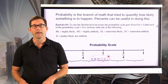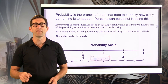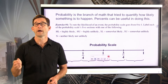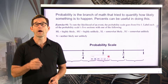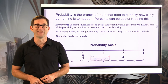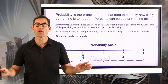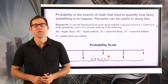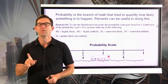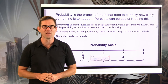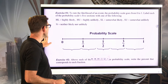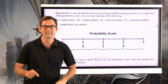Probability is the branch of math that tries to quantify how likely something is to happen. Percents can be useful in doing this. So let's take a look at what we call the probability scale.